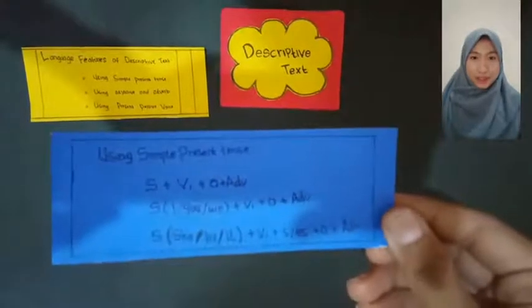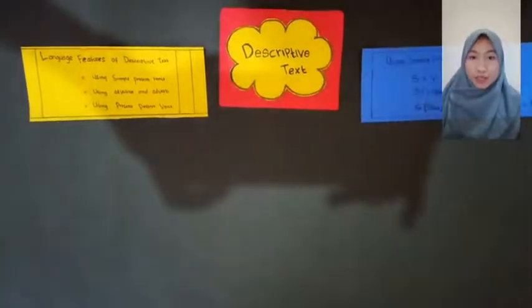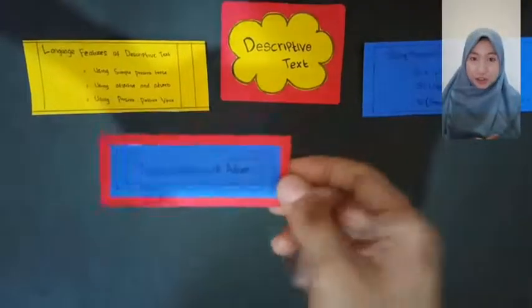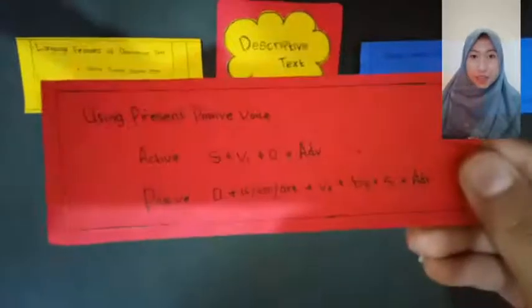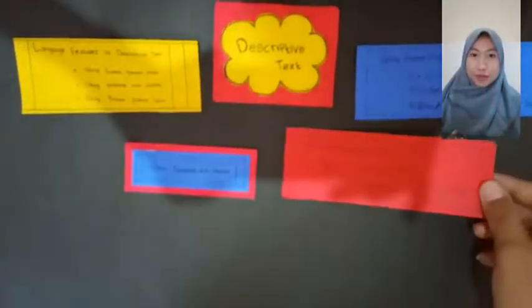Language features of descriptive text: the first is using simple present tense, the second is using adjectives and verbs, and the last is using present passive voice.